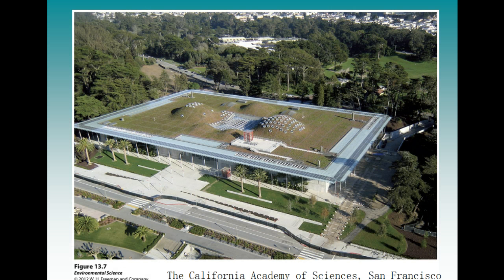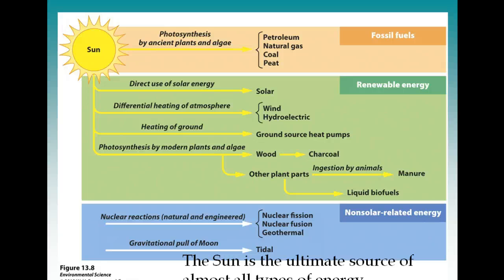There's an array of solar panels on top of the California Academy of Sciences in San Francisco to reduce their dependence on fossil fuels for electricity. The sun is the ultimate source of almost all types of energy. The only two non-solar-related energies are nuclear or geothermal energy, which comes from inside the earth, and tidal energy, which comes from the pull of the moon.